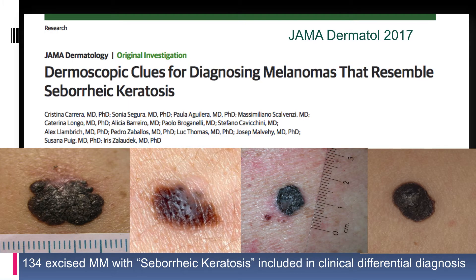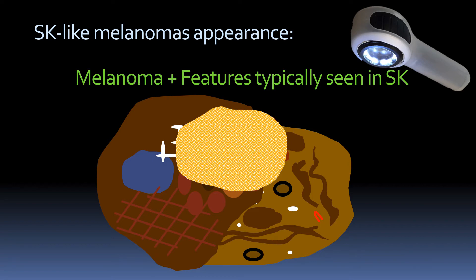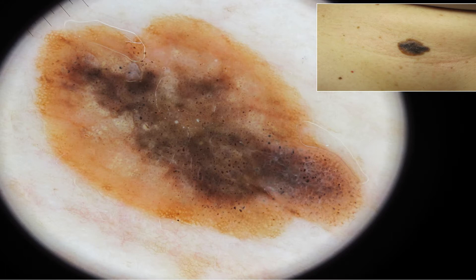We conducted a study reviewing more than 100 proven melanomas that clinically resembled seborrheic keratoses. As expected, we found that dermoscopically these lesions show a combination of features usually seen in melanocytic tumors and features typically seen in seborrheic keratosis. Here you can see one example of this lesion on a patient with plenty of other seborrheic keratoses. On dermoscopy, you can see that this lesion presents milia-like cysts, some comedo-like openings, a very well-demarcated border, but also a pigment network, some globules, and shiny white structures.